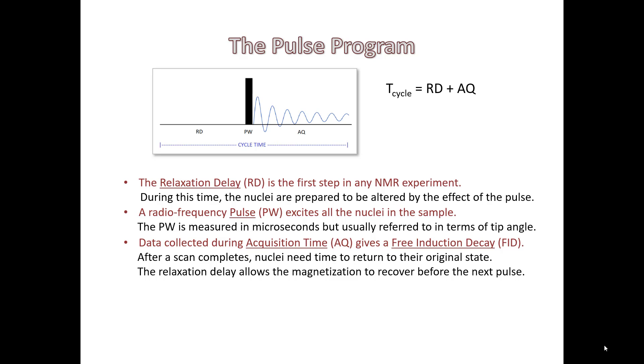The cycle time, or scan time, is how long it takes to accomplish one scan of an NMR experiment. It can be approximated as RD plus AQ, both measured in seconds, while the pulse width is measured in just microseconds.